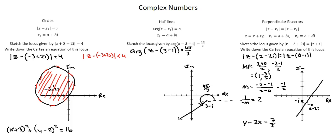In these examples, we've learned about circles, half lines, and perpendicular bisectors as representations of complex numbers in the Argan diagram. We've completed our requirements, and this concludes the lesson on complex numbers and loci.